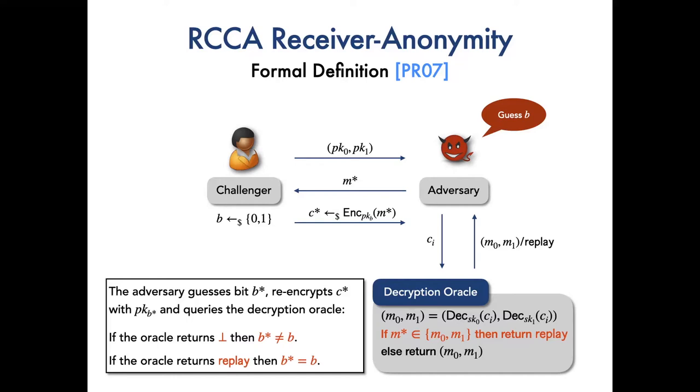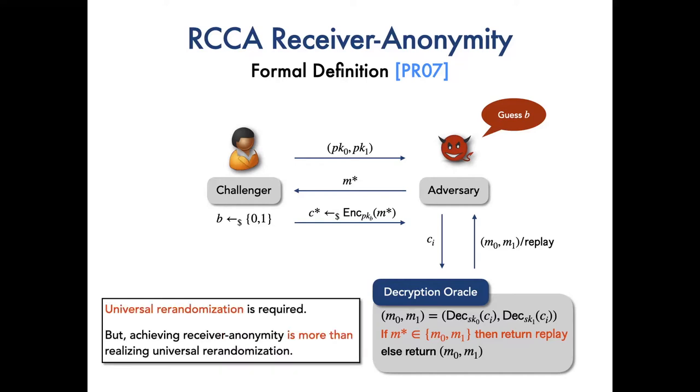Thus, to defend against this attack, it is required that the randomization of ciphertext should not involve the public key. That is to say, universal randomization is required. However, achieving receiver anonymity is more challenging than realizing universal randomization. An example is the PR scheme. It is universally randomizable but not receiver anonymous.